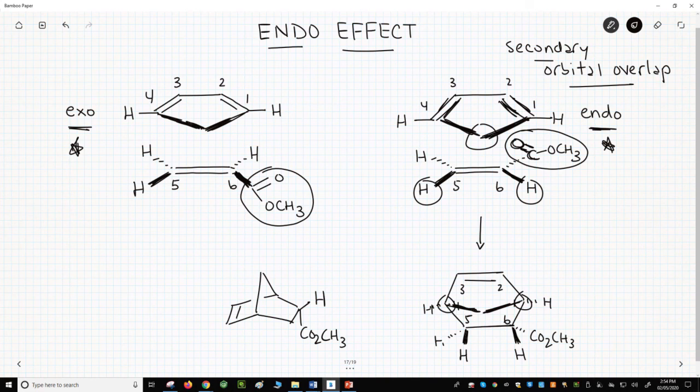We call this product the endo product because the main group on the dienophile, the ester, has an endo orientation. It was tucked under the dienophile during the reaction. Any group that was tucked under is also endo, so the ester was endo.